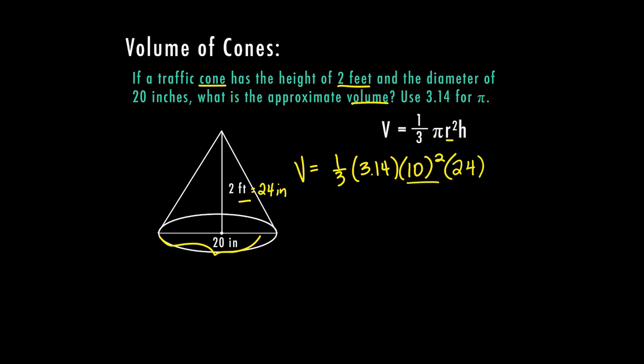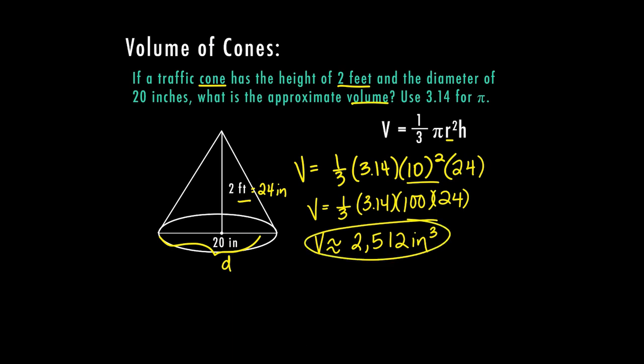Again, order of operations, I have to do 10 squared first, everything else comes down. And when I solve for the volume, it's going to be approximately 2,512 inches cubed. So this problem was a little bit harder because we had to find our radius based on the diameter. So you have to make sure you remember which one is labeled as which. And then we also had to convert our feet to inches so that all of our measurements matched. And then we could solve for our volume in cubic inches.